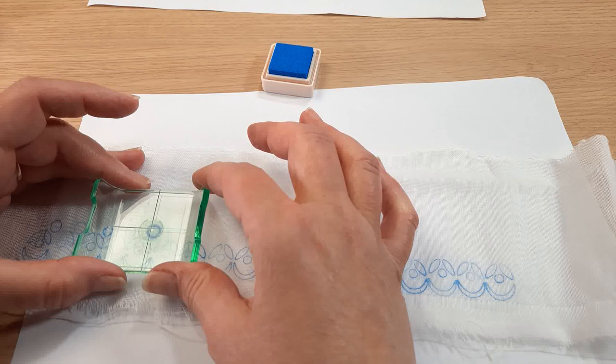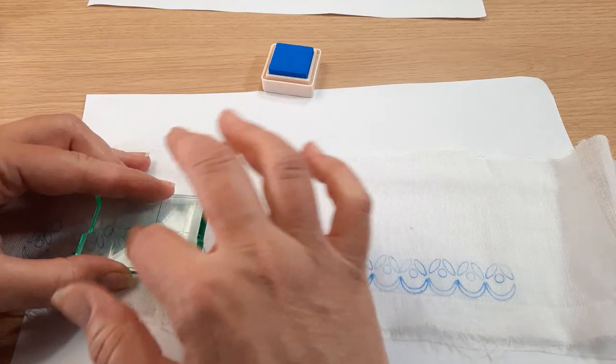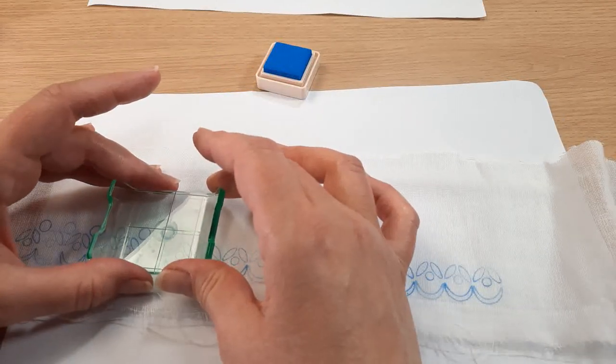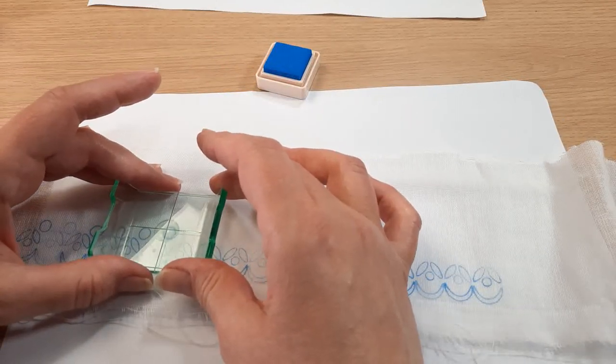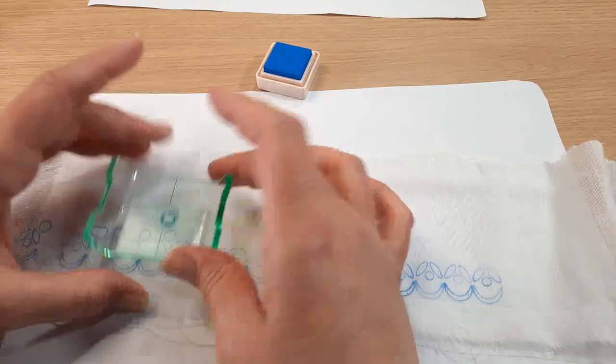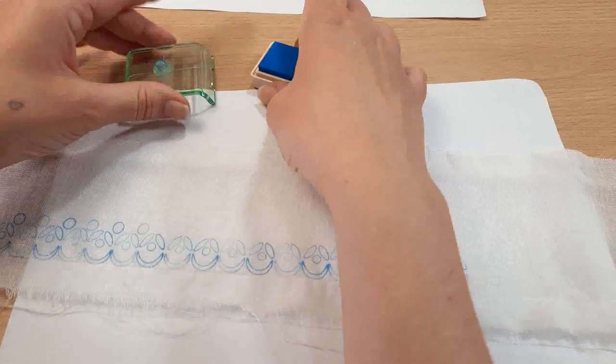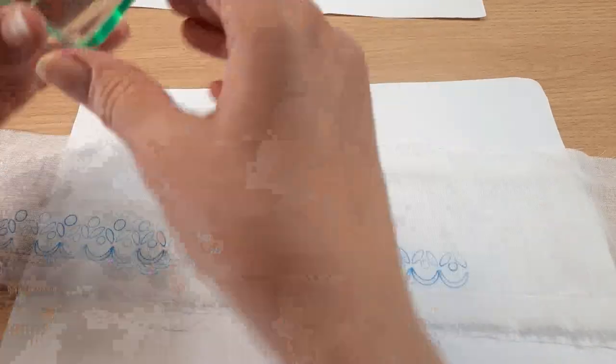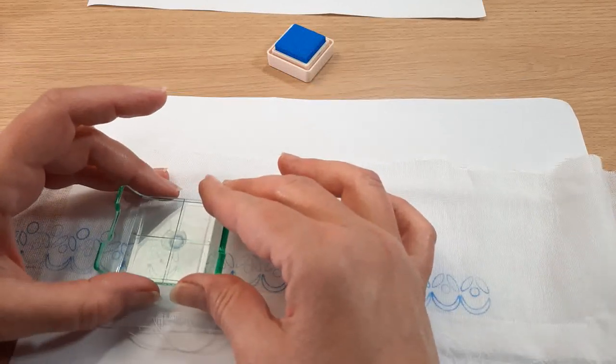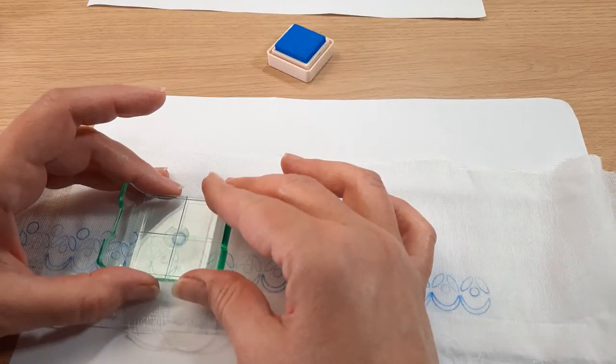And you see I'm using the grid marks on the block to help me to line everything up a little bit. And as I say I'm still doing it by eye I'm not sort of fussing over absolute perfection. Let's face it my stitching isn't going to be absolutely perfect either so.